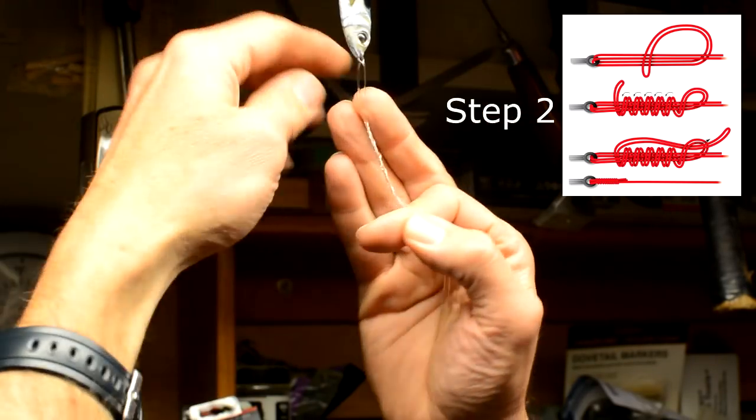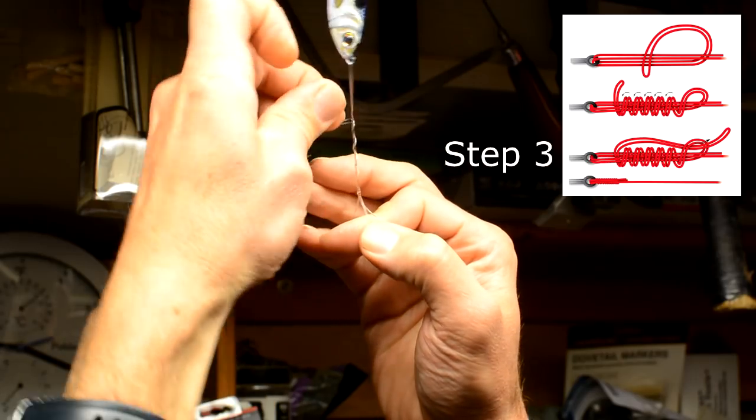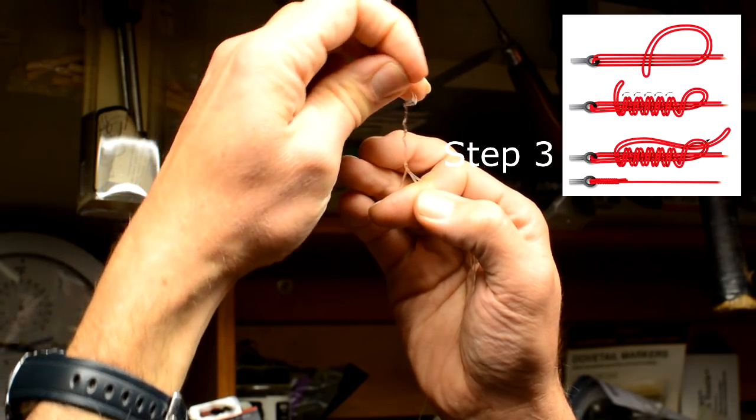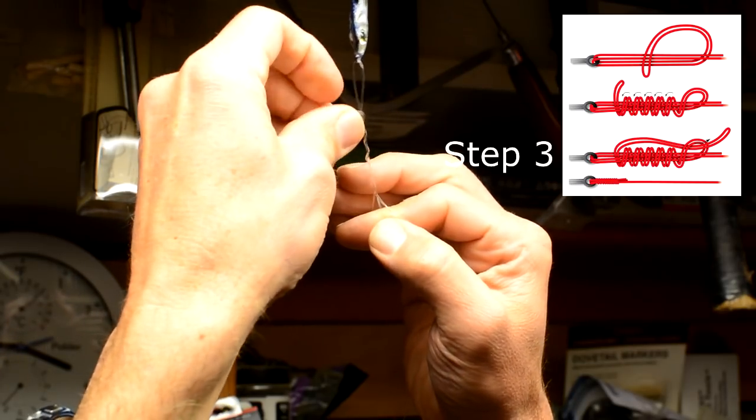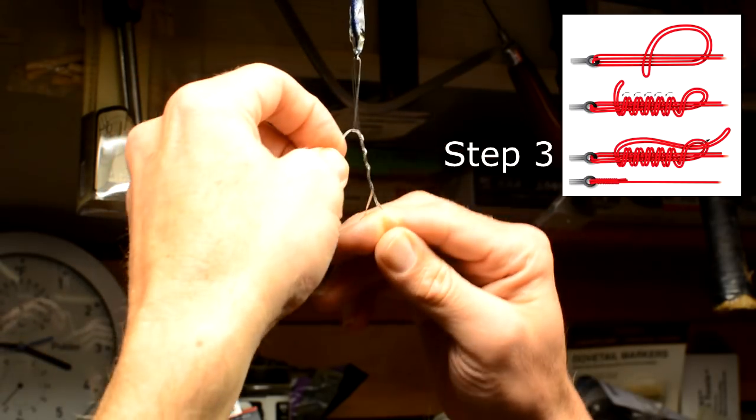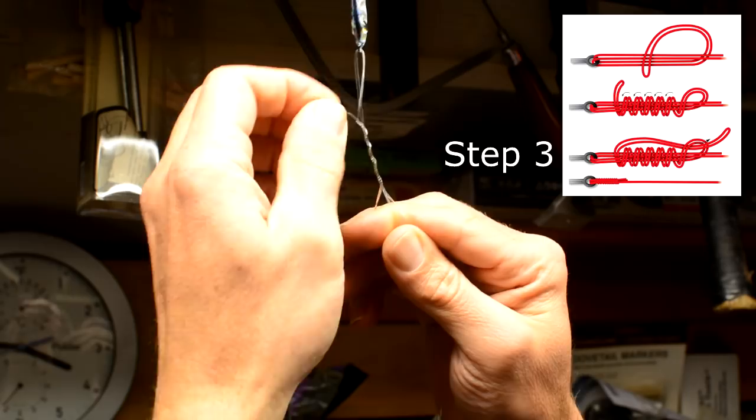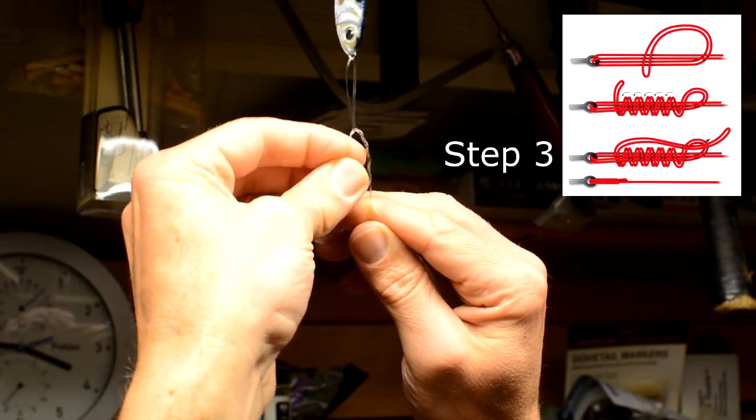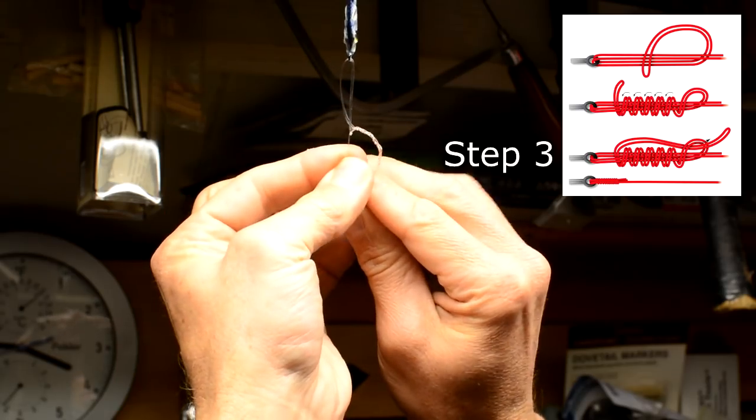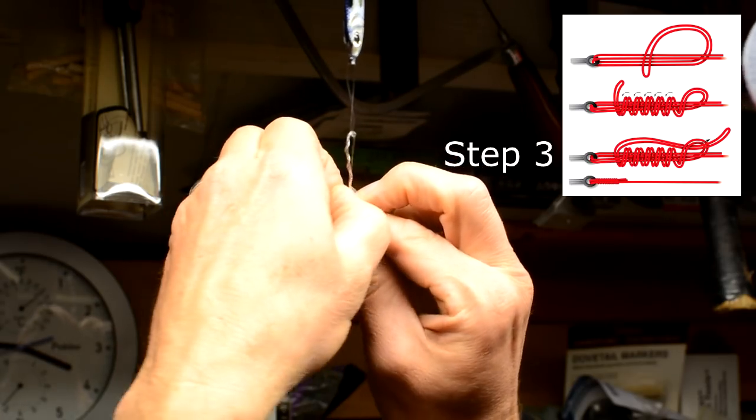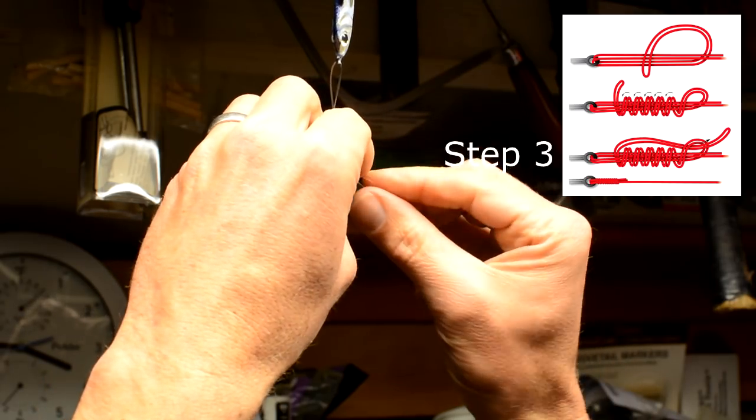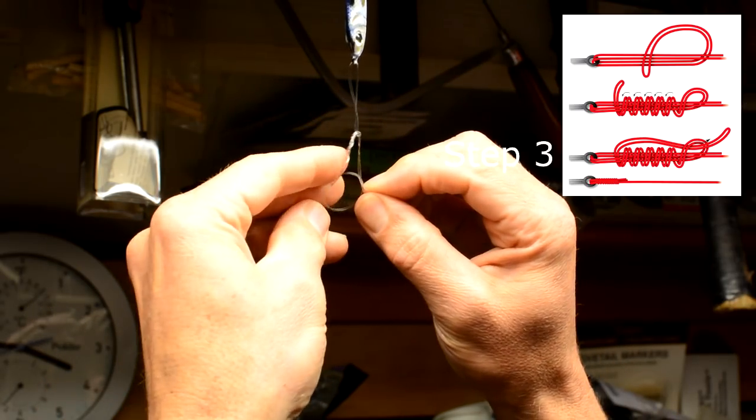Once you're done wrapping it 5 times, we are going to do step 3 in which you're going to take the working end and pass it through the loop that was created at step 1 when you passed the line through the hook eye. This step gets a bit tricky. What you need to do is pass the working end of the line through the loop around your finger, grab it with your middle finger, slide it off your forefinger, grab the loop with your right hand if you're right handed.